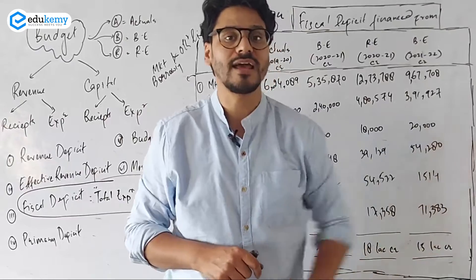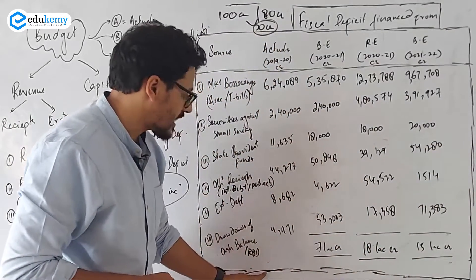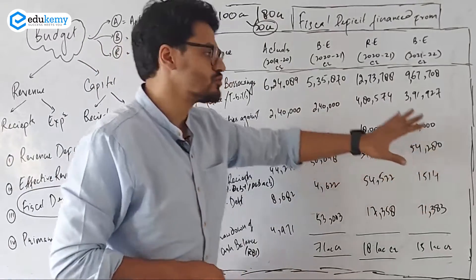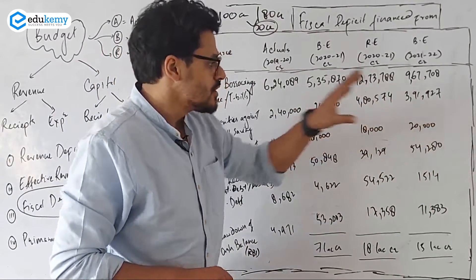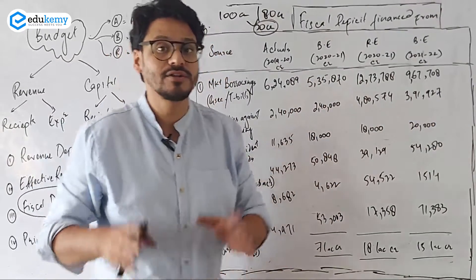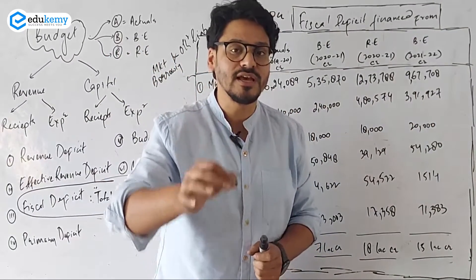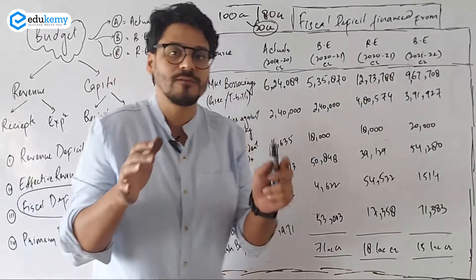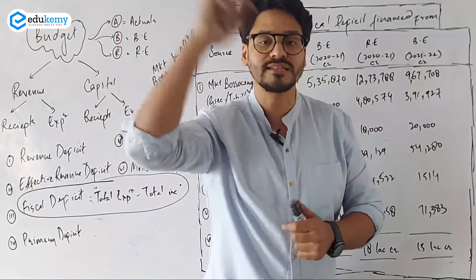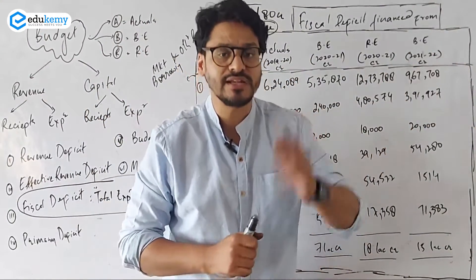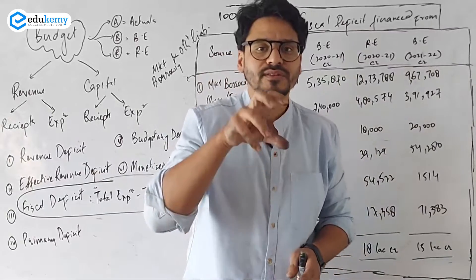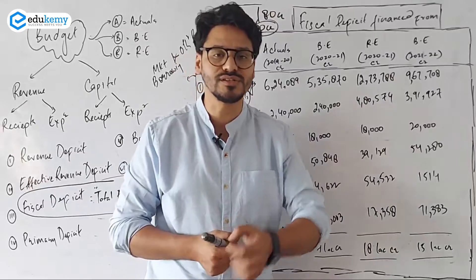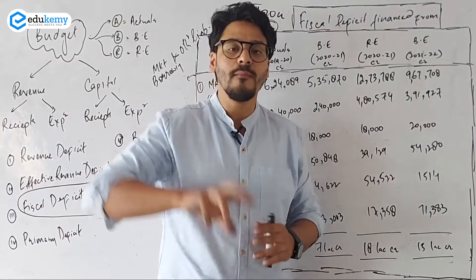Do not focus on these specific numbers — this is UPSC, not an accounting exam. You need to know the trend. If your fiscal deficit is 100 crore expenditure and only 80 crore income, then 20 crore deficit has to be financed. This 20 crore can be financed from all these sources. We will look at each source one by one.